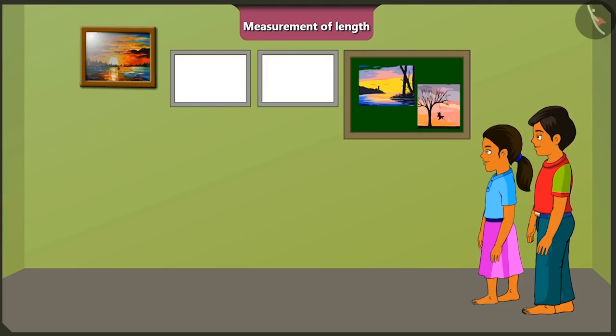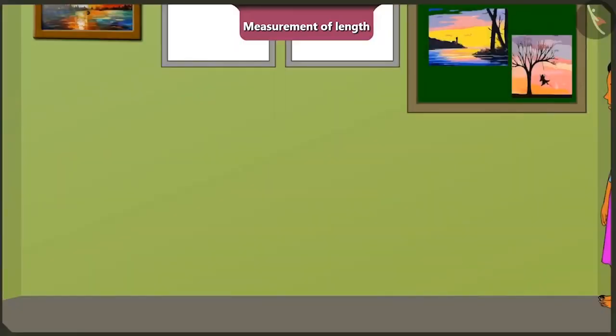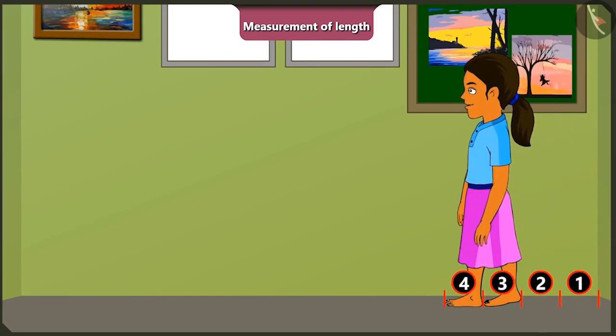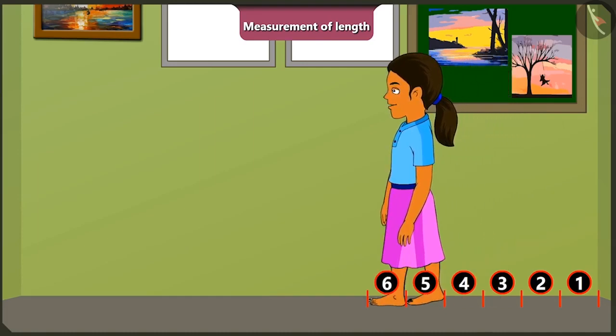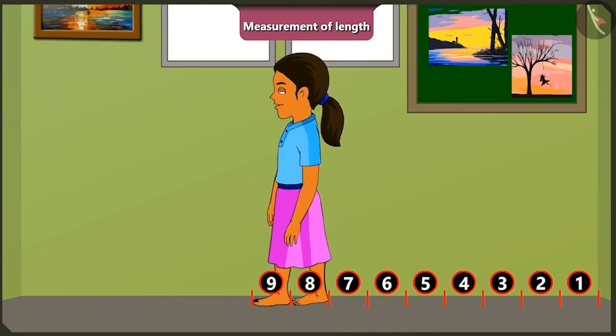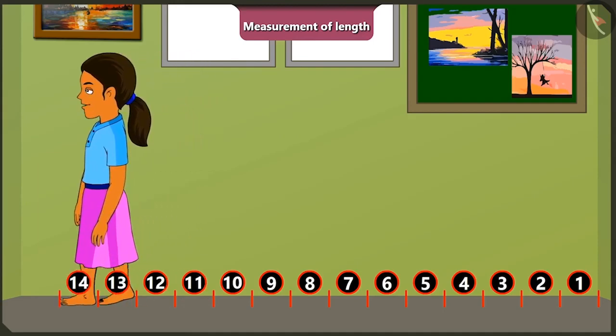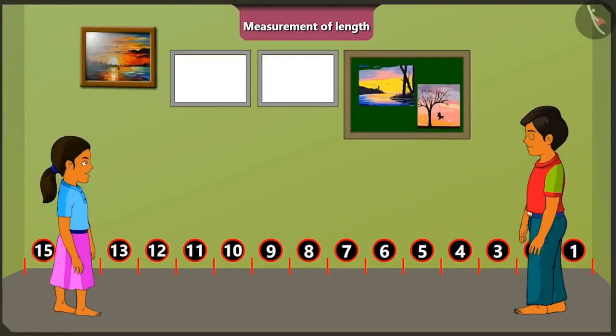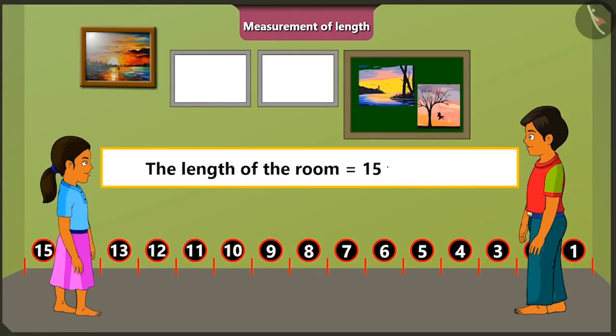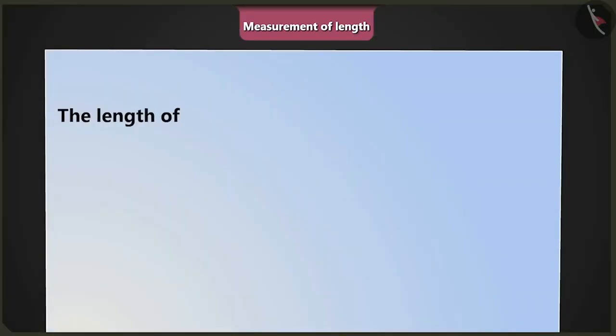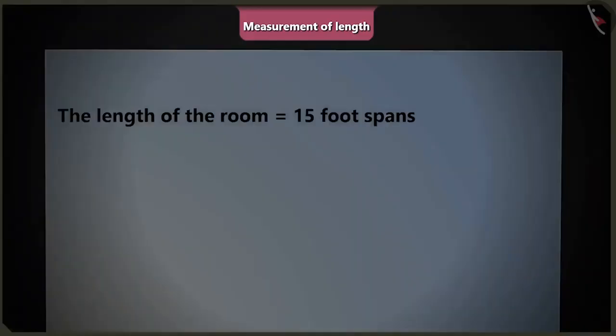With my foot length. See, if I measure the length of the room with my feet then the length of the room is... So the length of this room is equal to 15 foot spans. Absolutely correct! Now write the length of this room down in your notebook. So the length of my room is 15 foot spans. Absolutely correct!